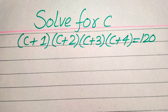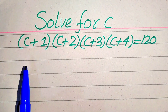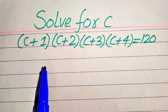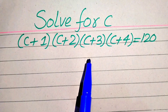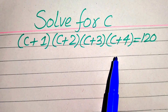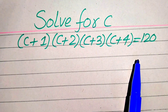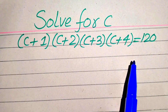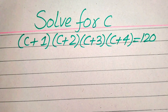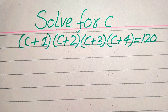Hello everyone. How to solve this problem for the values of C, if we have (C+1)(C+2)(C+3)(C+4) = 120, and we solve this problem for the values of C.